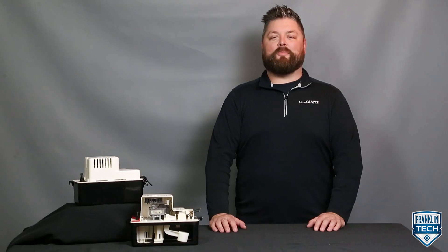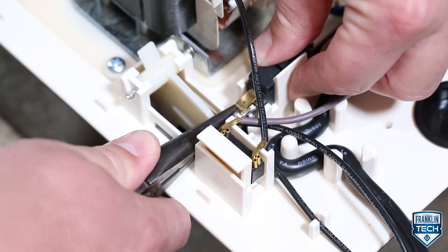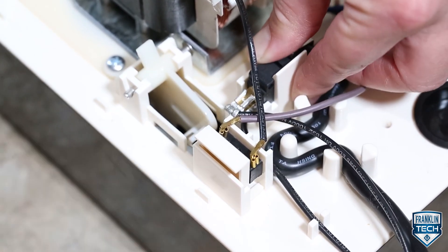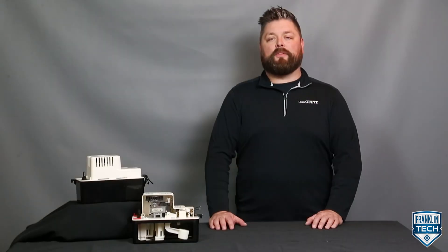For the second option, you can reconfigure the switch to the NC terminal to close a low voltage circuit in the event of a high water level, which could activate an external alarm or relay. Use the following procedure if an NC configuration is required.